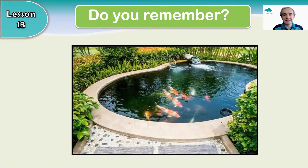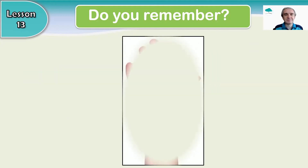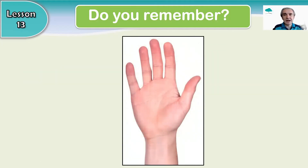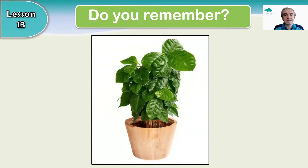What was this? The fish inside — we call it a pond. The ND sound. This one you can wave — it is your hand. ND sound. And this one you might have in your house or your garden — it is a plant. Plant, with NT.